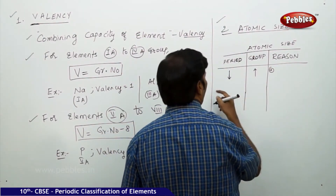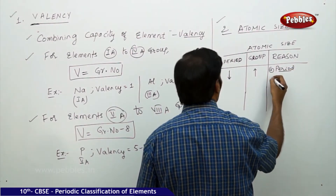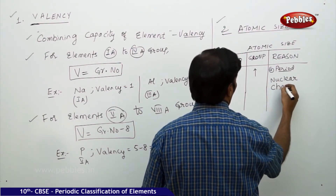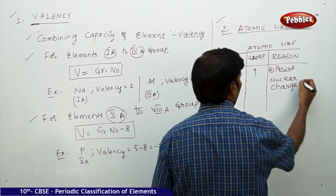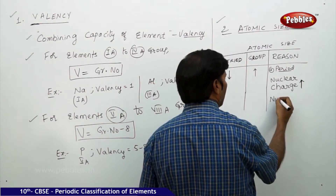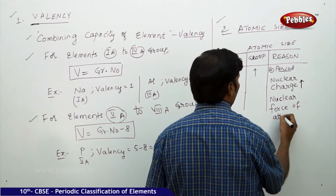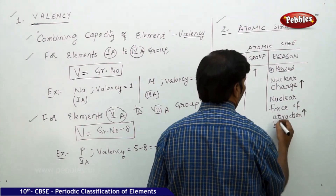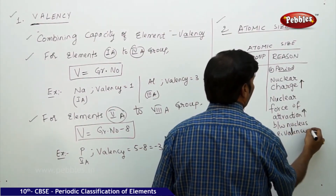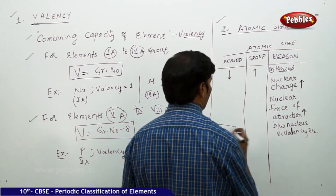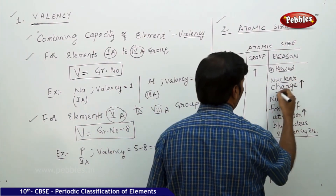In a period, the nuclear charge increases, so the nuclear force of attraction between the nucleus and the valency electrons increases. This is the justification for the decrease of atomic size in a period.